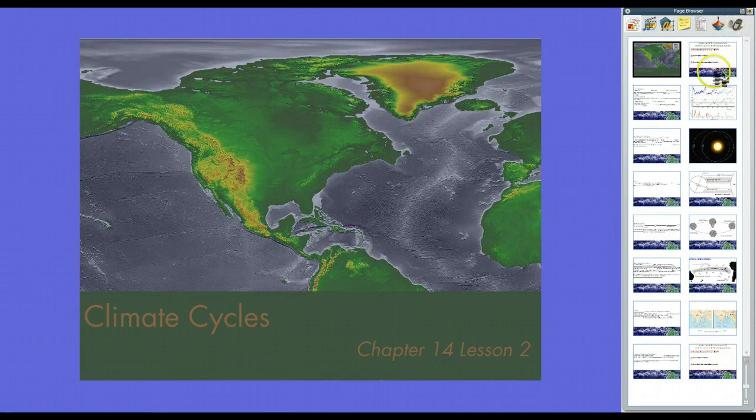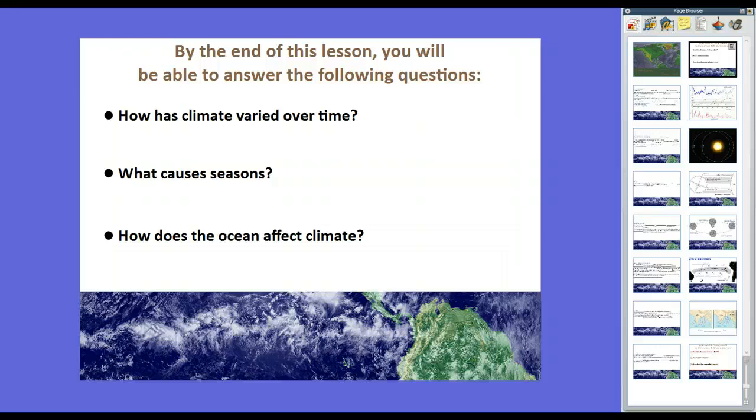By the end of this lesson, you will be able to answer the following questions. Question number one, how has climate varied over time? Question number two, what causes seasons? And finally, question number three, how does the ocean affect climate? Now, if you've been in elementary school, you learned about the seasons and you put on heavy coats in winter and it gets nice outside and flowers show up in spring and it's warm and sunny in the summer and during autumn the leaves fall. That's part of the cycles of climate that go over time.